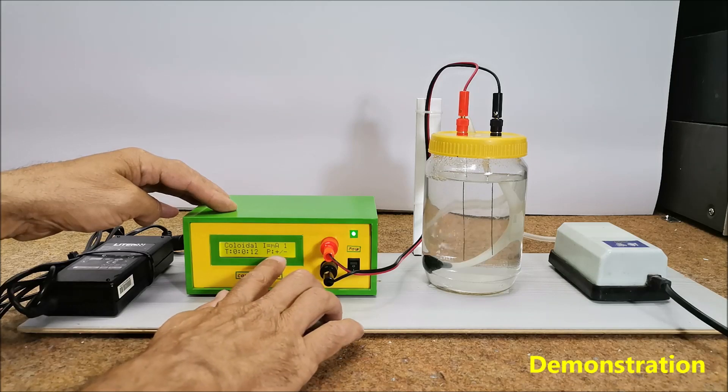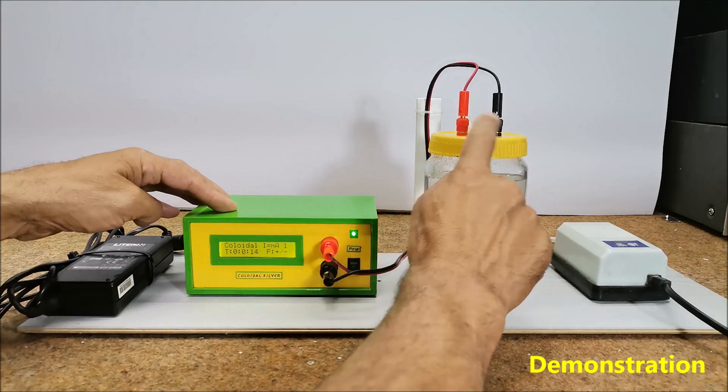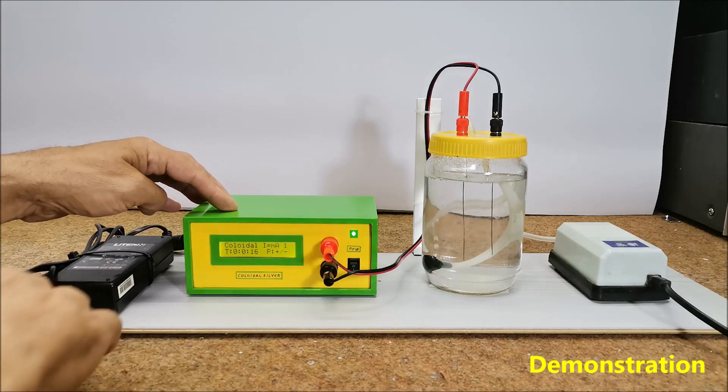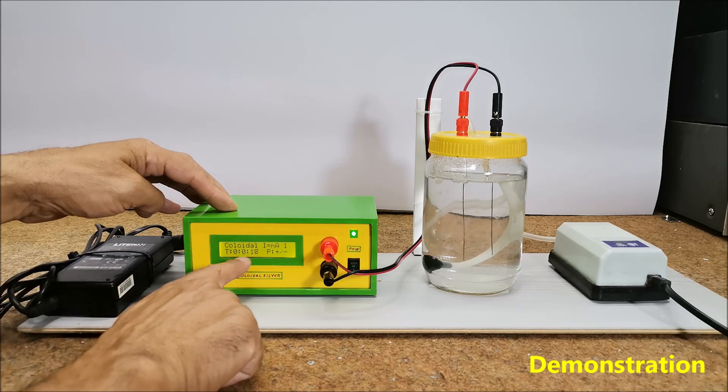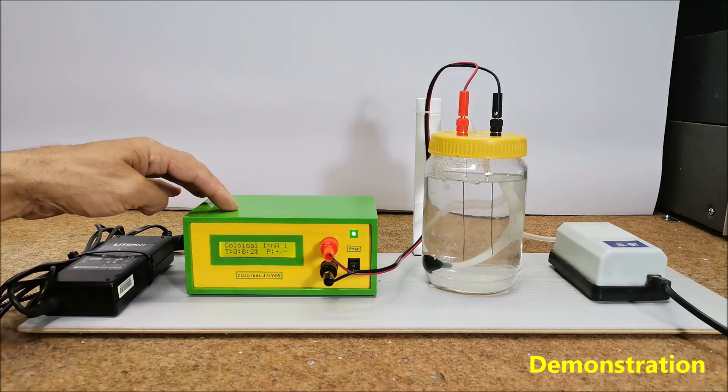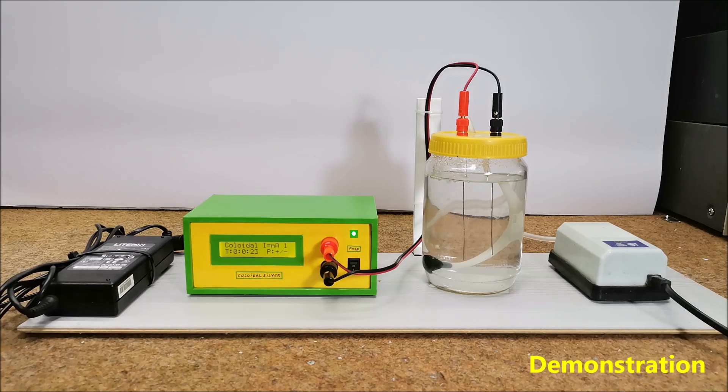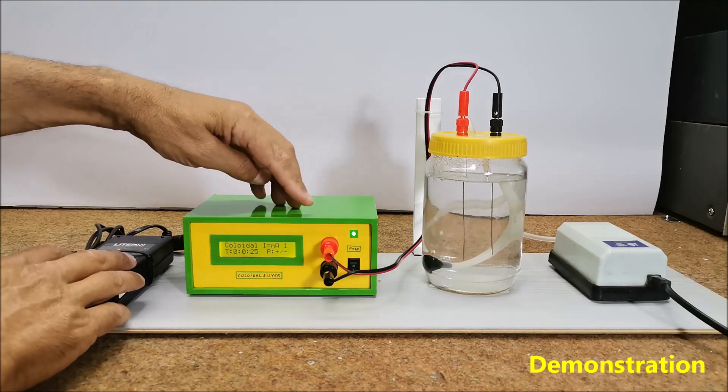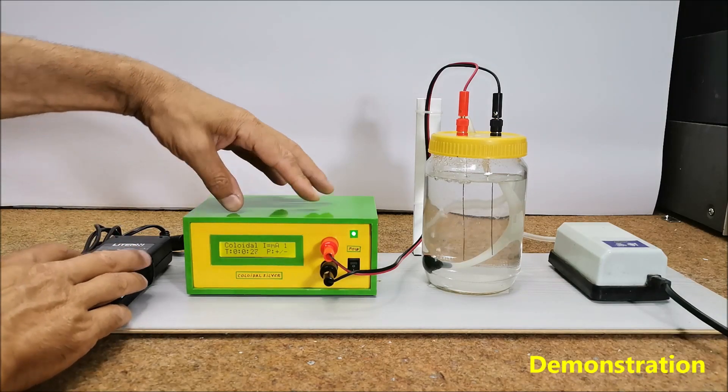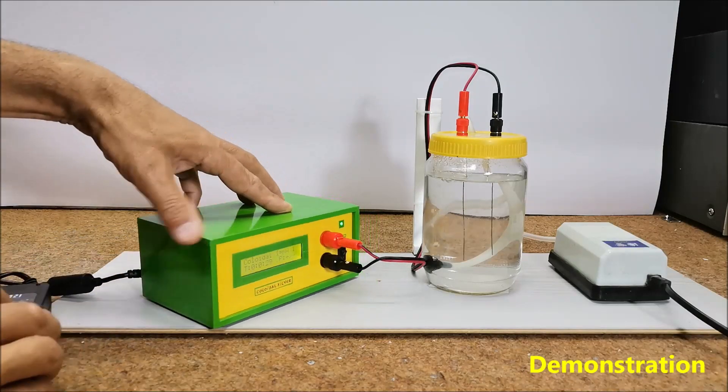This is the current flowing in the circuit in 10mA. Next, the polarity of electrodes, plus minus or minus plus, and the elapsed time since the device was turned on. The current can be changed continuously in the range from 0 to 10mA using the potentiometer located on the back of the device.